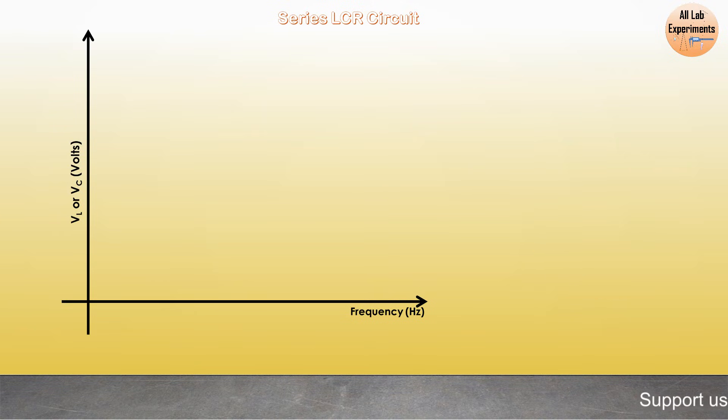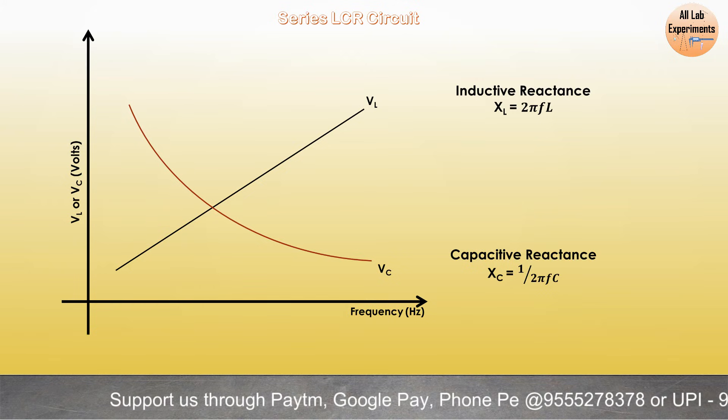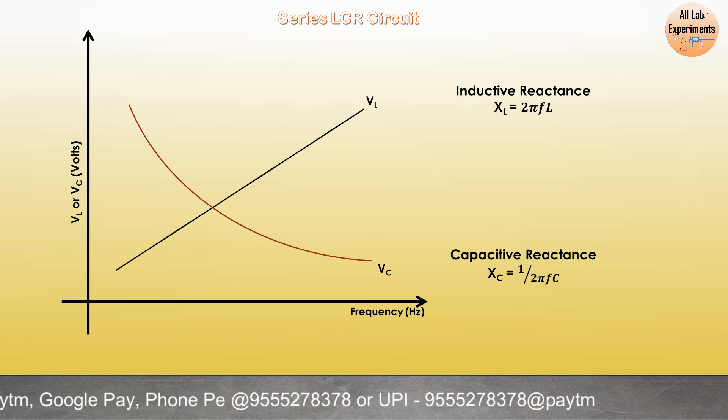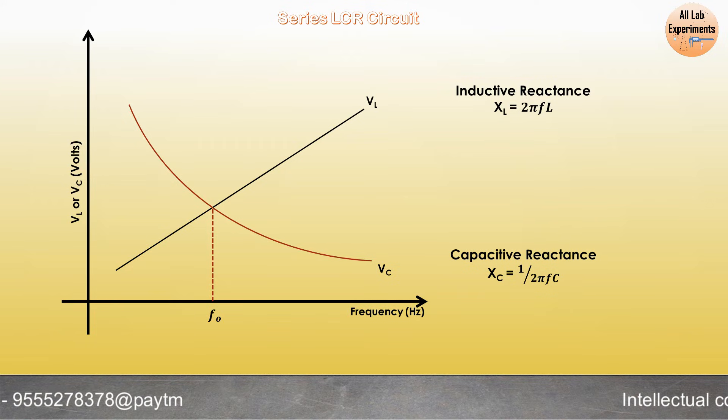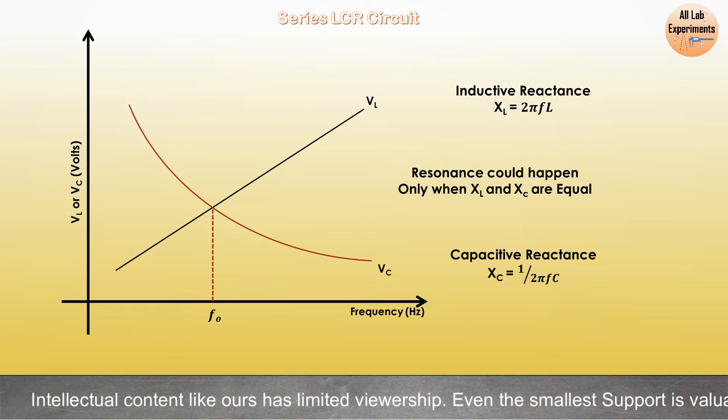If we plot this voltage drop with respect to frequency, we get curves like this. This is because inductive reactance is proportional to the frequency, capacitive reactance is inversely proportional. When their values become equal, this is our resonance frequency at which we obtain the maximum value of current. Only in that frequency range where their values are equal can you get resonance.